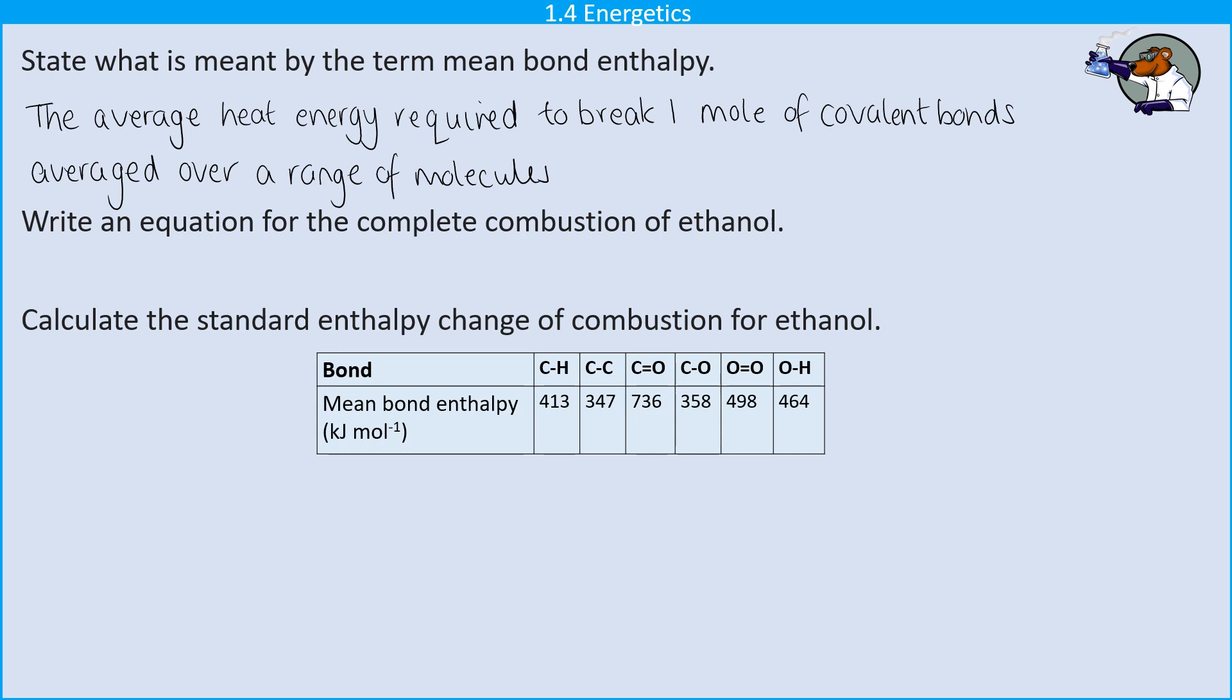Then the next question is not that far removed from what you would have done in GCSE. So we start off with ethanol, which of course is C2H5OH, and we're going to need to add some oxygen, but we don't know how much yet. And that, of course, is going to make carbon dioxide and also water.